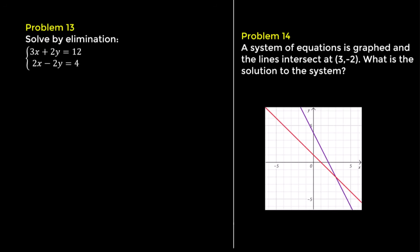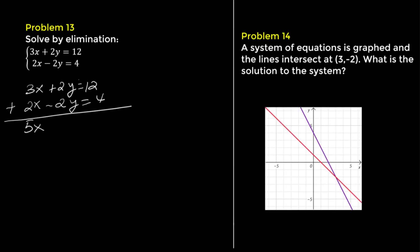Problem 13. Solve by elimination: 3x plus 2y equals 12 and 2x minus 2y equals 4. Add the equations to get 5x equals 16. Divide by 5 to get x equals 16 over 5, or 3.2.